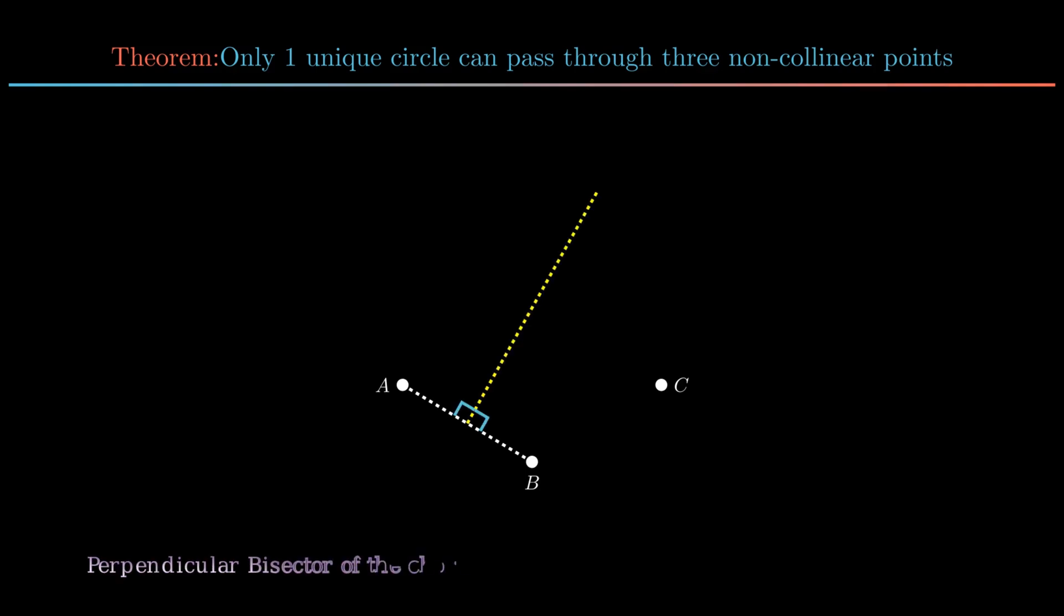As perpendicular bisector of the chord always passes through the center of the circle, so to find the center of the circle on the perpendicular bisector line of AB, join point B to C and construct perpendicular bisector of it.